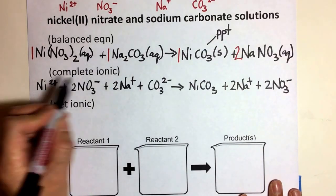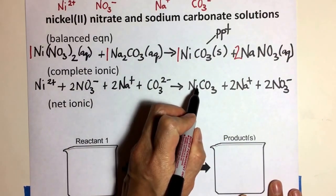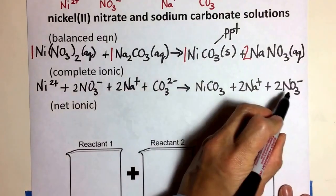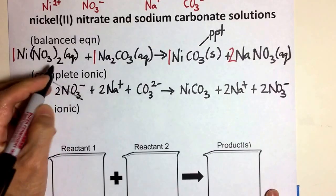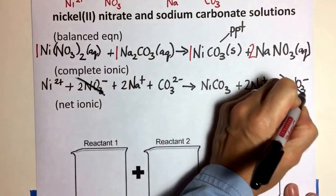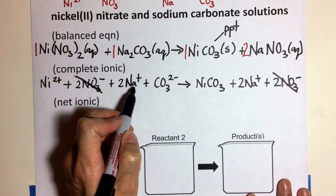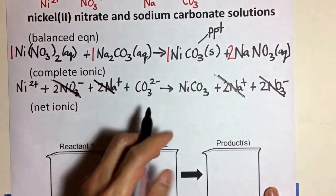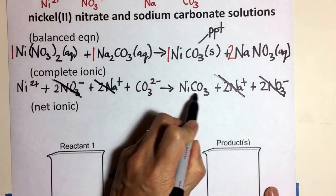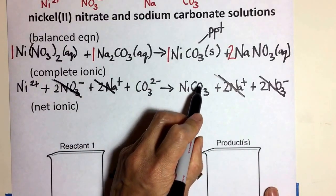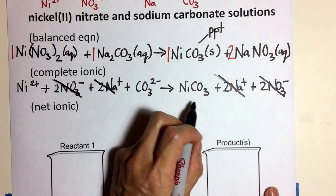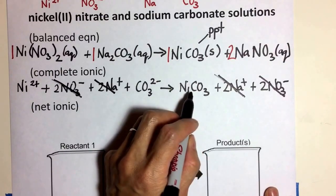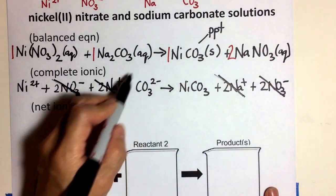Nickel two plus — I look over here and I see nickel, but it's not nickel two plus, so it's not a spectator ion. Two nitrate — I look and I see there are two nitrate ions, which means that's a spectator ion — cancel that out. There are two sodiums here and two sodiums there — cancel that out. The carbonate ion I see in the precipitate, but it's not separated as an ion, so it doesn't look exactly alike here — one is inside the ionic compound versus one that's dissolved.